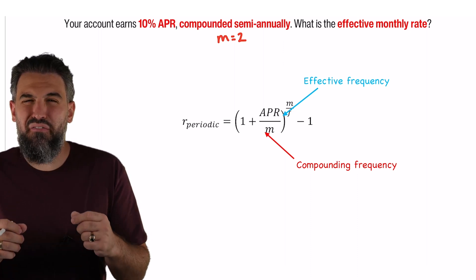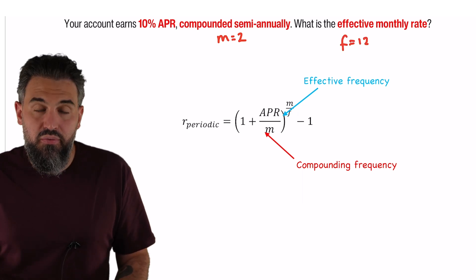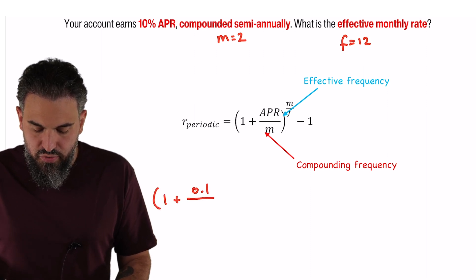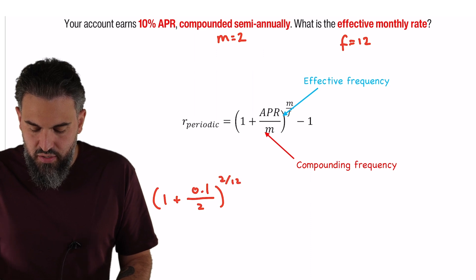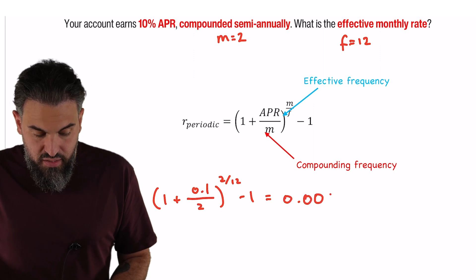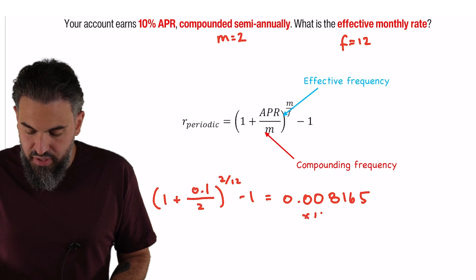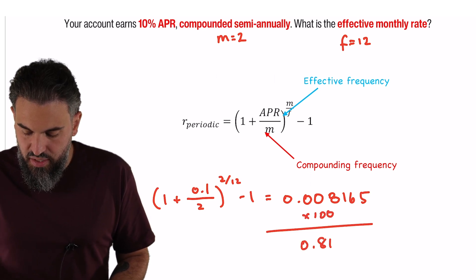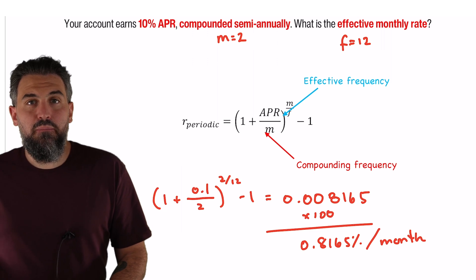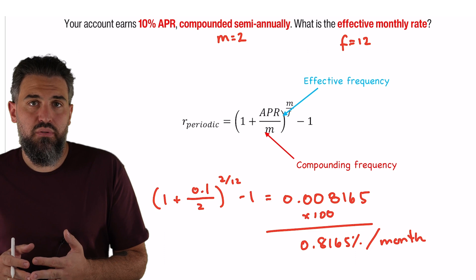I want an effective monthly rate, that means I'm going to set my F to 12. So let's see what that gives us: 1 plus APR, that's 10%, over 2 to the power of 2 over 12 minus 1. I'll throw that into our calculator: 0.008165, and if I multiply that by 100 that's 0.8165%. And that is per month. So that is the effective or the true monthly rate if you have 10% APR compounding twice per year.